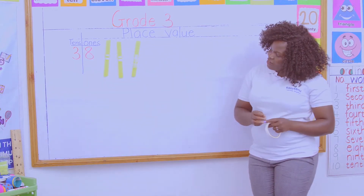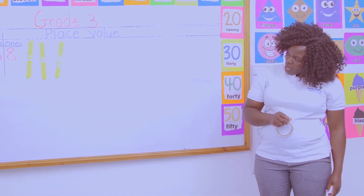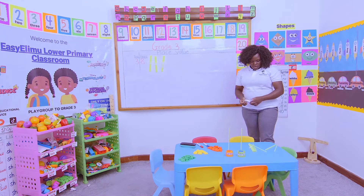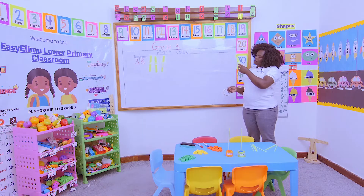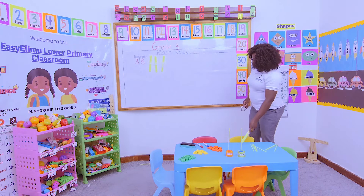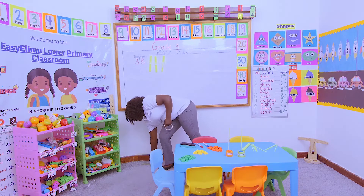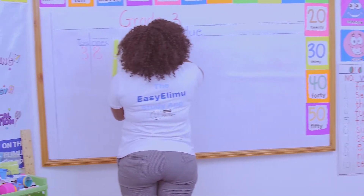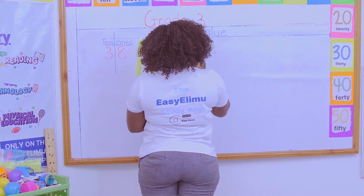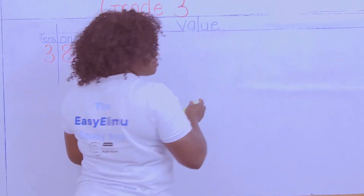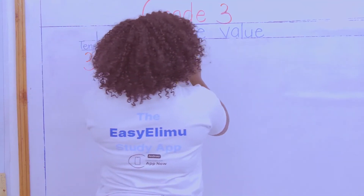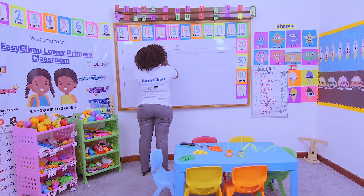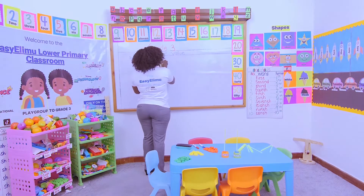Very good. But now, have I finished my question? I have not. Why? They have said I showed the number 38 using bundles of sticks. So will I take the full bundle of 10 sticks and put them? No. The 8 is in the ones place value, so the 8 cannot be in the tens place value. We only have 8 single sticks that I will put in there to represent the 8 sticks.